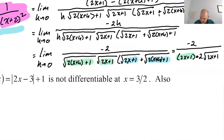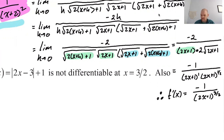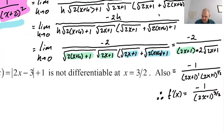Now the 2s cancel and I get negative 1 over the quantity 2x plus 1 to the first times 2x plus 1 to the one half — which is 2x plus 1 to the 3 halves. Therefore f prime of x equals negative 1 over the quantity 2x plus 1 to the 3 halves. That's a doozy — that's about as hard as they get with the limit definition.